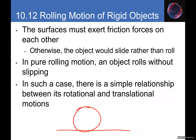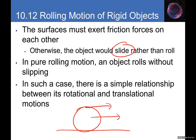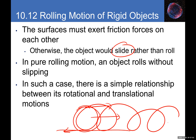The surface must exert friction forces; otherwise the object would slide rather than roll. If you push a disc with no friction, all parts move in the same direction — it just slides. With friction, this part goes forward, the bottom goes backward, and it rolls. The static friction enables rolling. Even with friction present, from an energy perspective, rolling can still conserve mechanical energy.